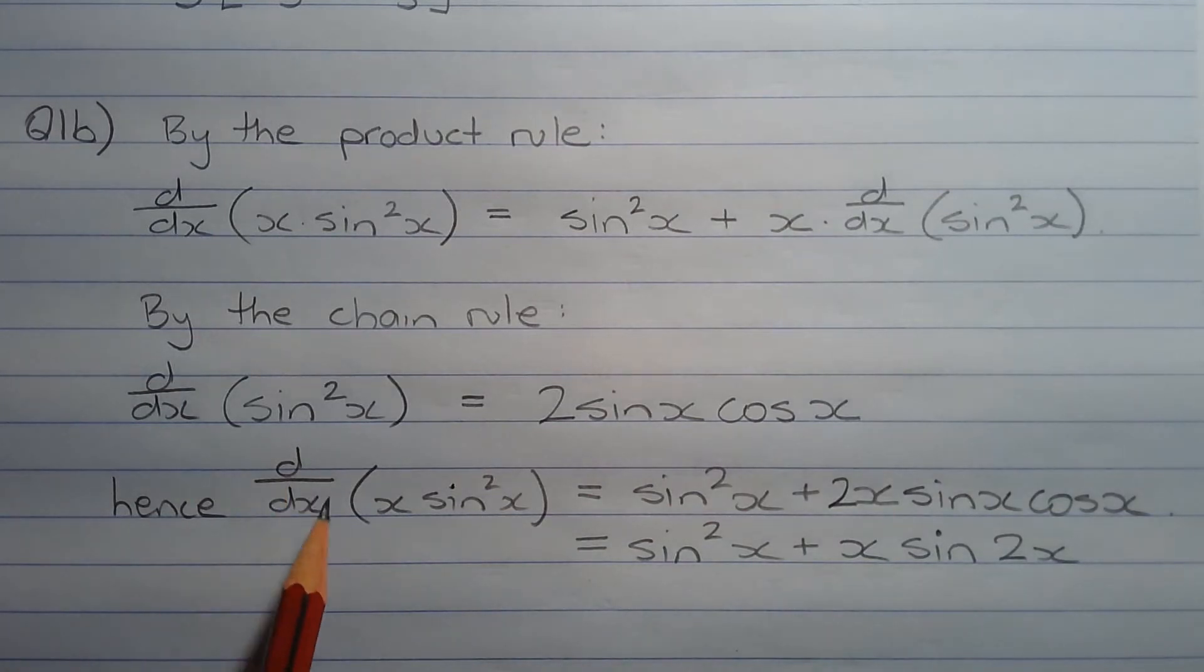Hence, the first derivative with respect to x of x multiplied by sine squared x equals sine squared x plus 2x sine x cos x. Two sine x cos x can be expressed as a double angle, and that equals sine squared x plus x multiplied by sine 2x.